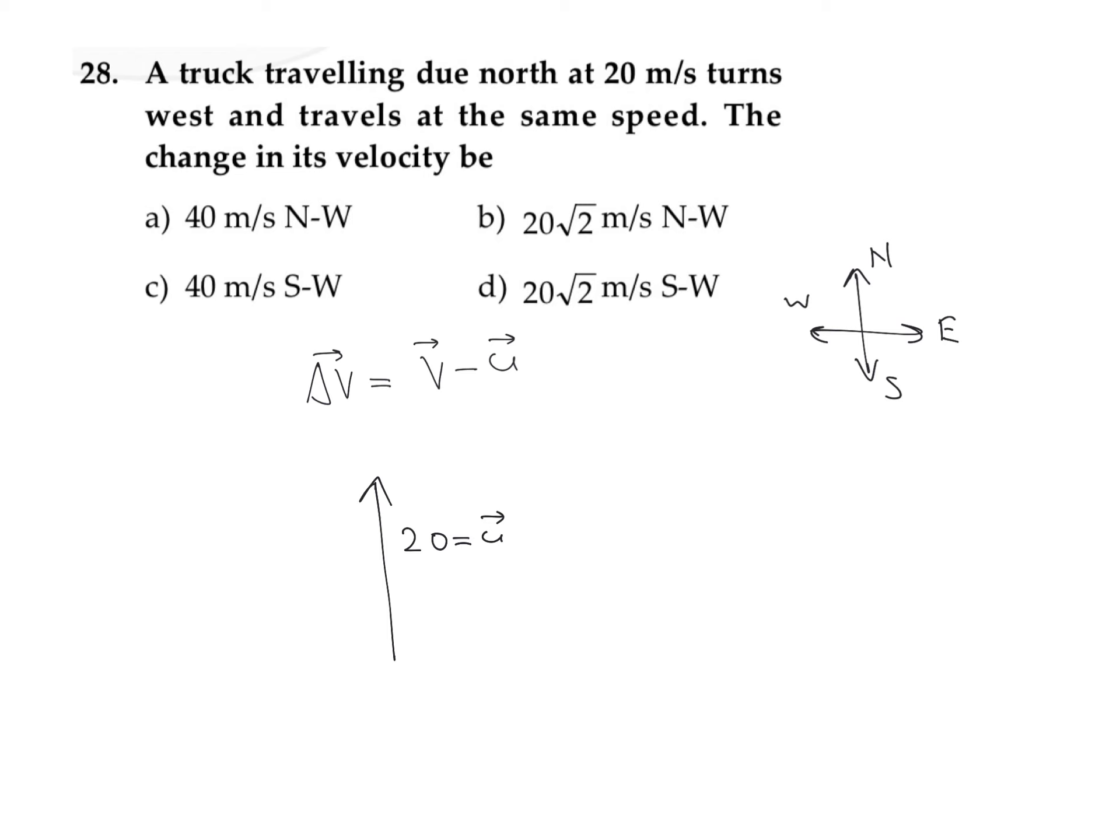The truck turns west. Now it is traveling west at the same speed. This is our final velocity vector, which we can call v vector.